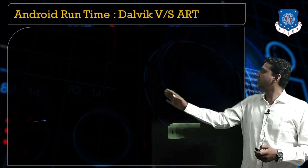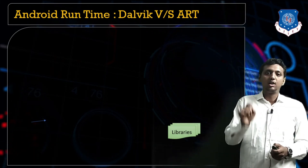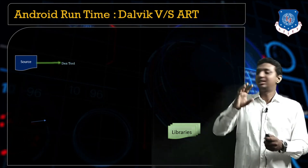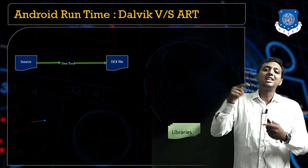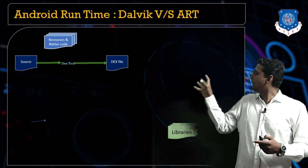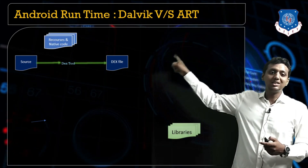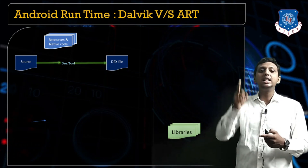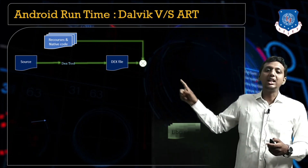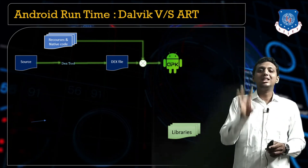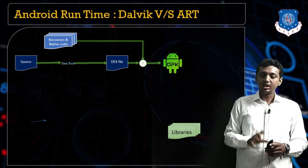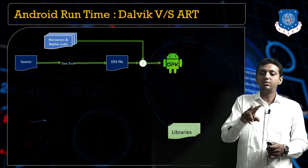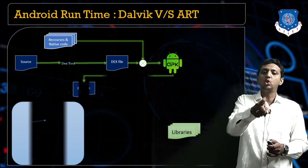This is all about how Dalvik and ART work. When a student clicks on an application, first the source code is converted into a .dex file. This .dex file is combined with resources and native code to generate one APK file — the Android application package. This APK file can be executed in two different ways: one with DVM and one with ART.